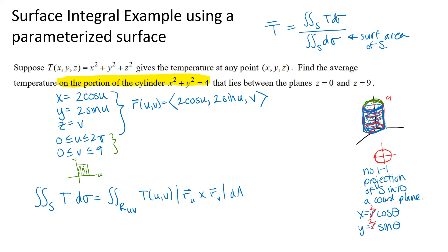There are some conditions I need to verify to confirm I have a smooth parameterization, and you can check those by thinking about these partial derivatives. Let's calculate them. r sub u — the partial derivative of r with respect to u, treating v as a constant — gives negative two sine u, two cosine u, and zero. And r sub v — differentiating with respect to v, treating u as a constant — gives zero, zero, one. Both of these are continuous, which is one of the conditions for a smooth parameterization.